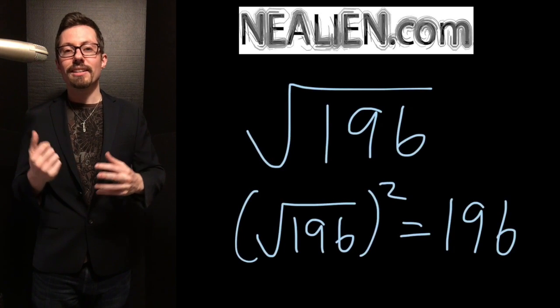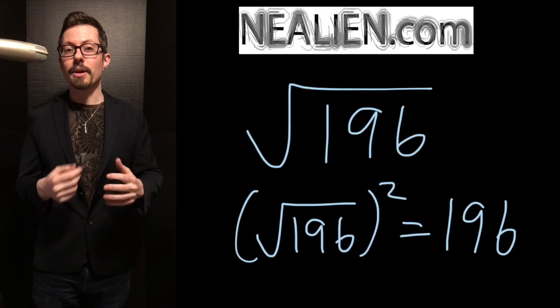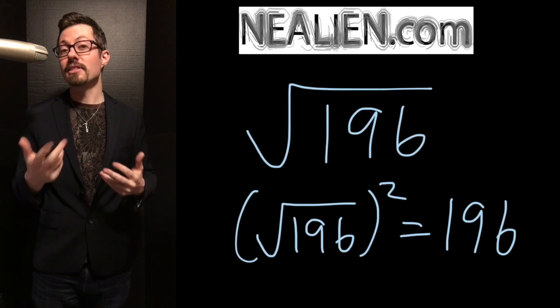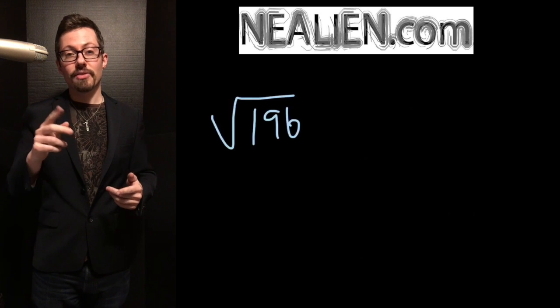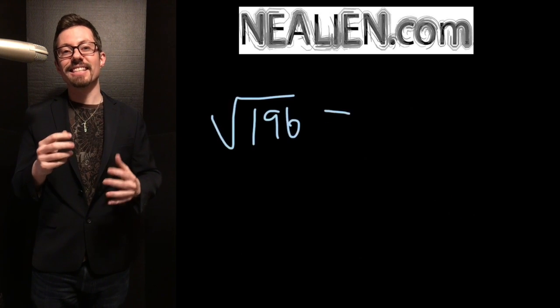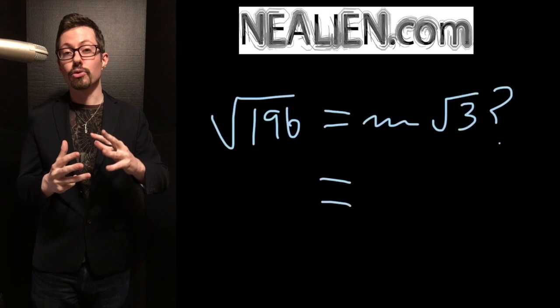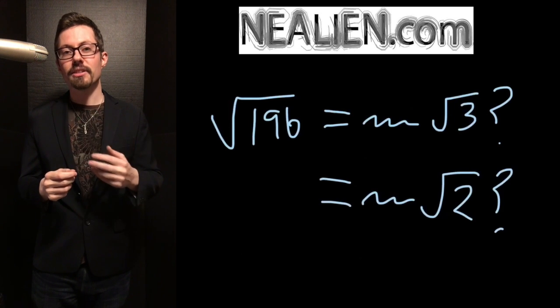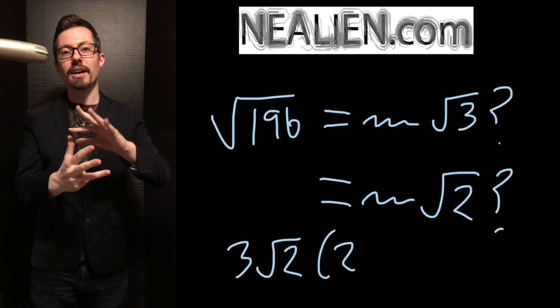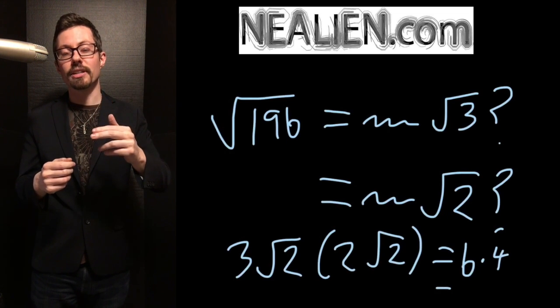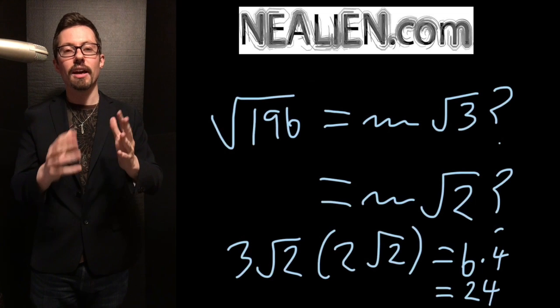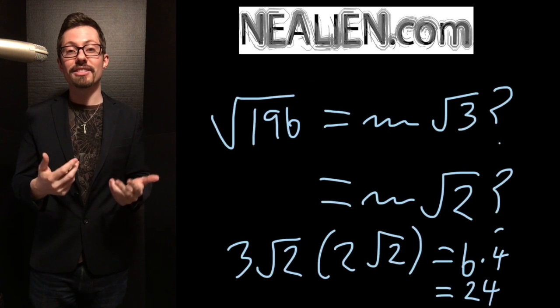If you want to write it in a different form, sometimes you do that in school, maybe you're not always sure why. Sometimes it is useful, sometimes it isn't. If you're trying to simplify the square root of 196 and see it in terms of other roots, like the square root of 3 or the square root of 2, those might be useful if you're dividing by 2 of the square root of 3 or 3 of the square root of 2.